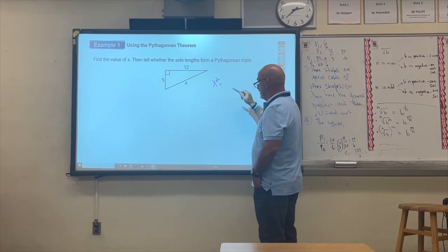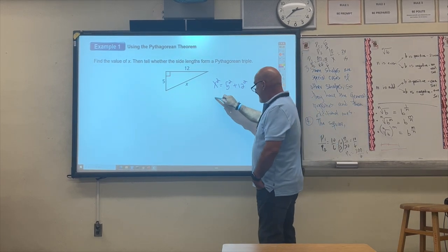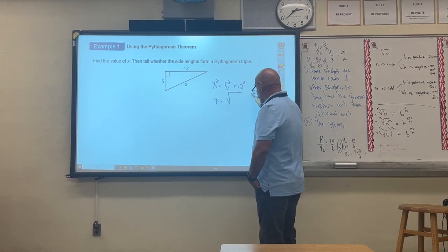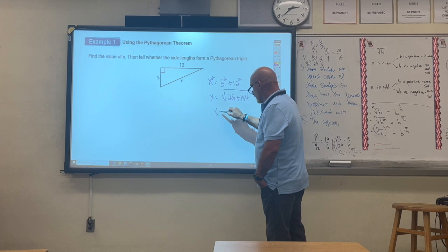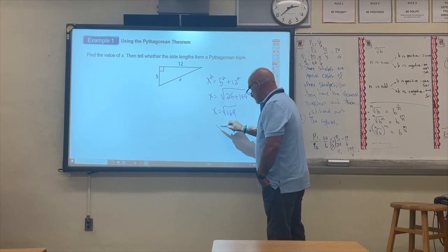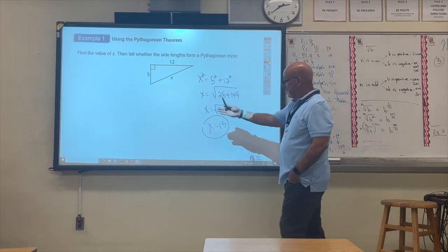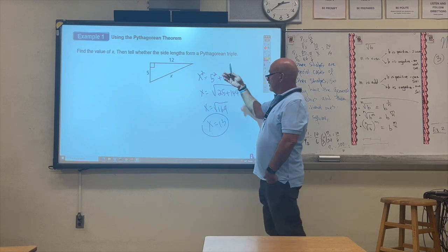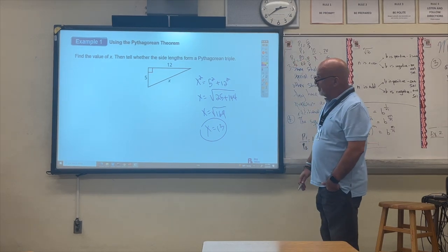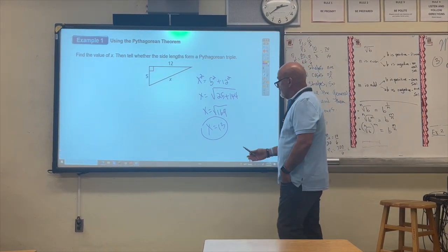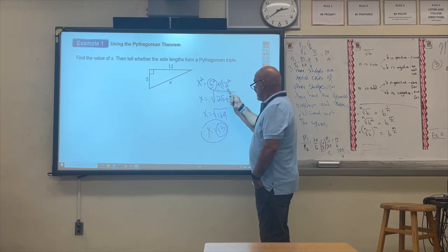So x equals the square root of 5 squared, which is 25, plus 12 squared, which is 144. x equals the square root of 169, which is 13. So 13 is the missing side. In the second part, we determine if they form a Pythagorean triple — and yes, they do, because 13, 5, and 12 are all integers.